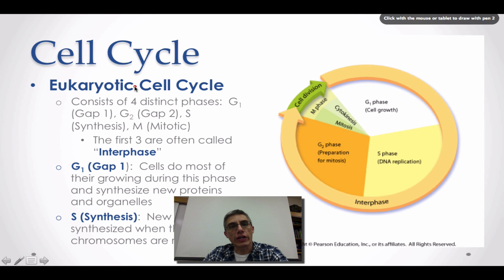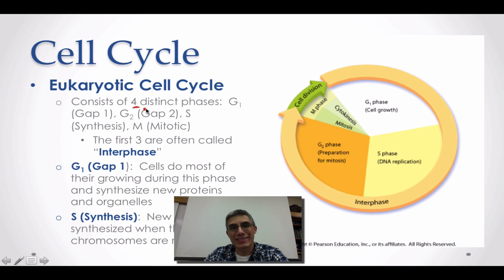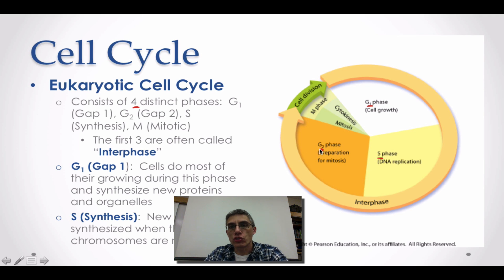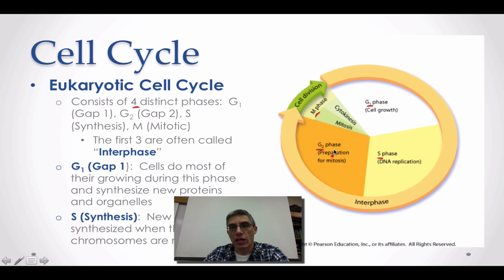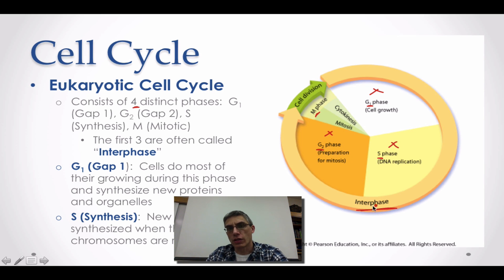The eukaryotic cell cycle is much more complicated because it involves four distinct phases: G1 (Gap 1 phase), S (synthesis phase), G2 (Gap 2 phase), and the M phase, or what we call the mitotic phase. G1, S, and G2 together represent interphase for the cell.